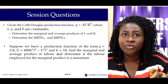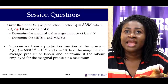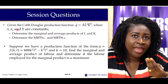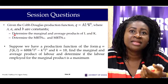The section question is: given a Cobb-Douglas production function where A, small a, and b are constants, determine the marginal and average product of labor, and determine the marginal rate of substitution. This is also a scenario for you to try. Thank you very much and all the best.